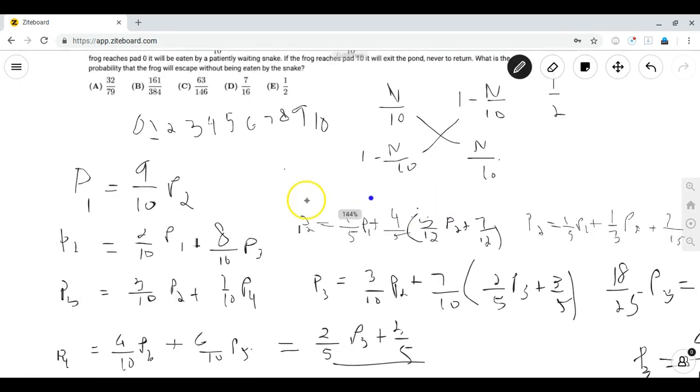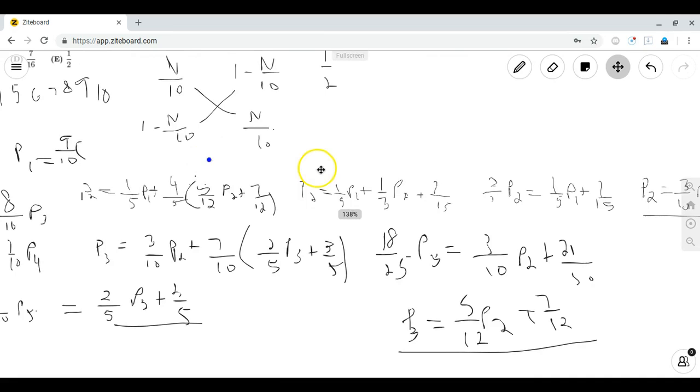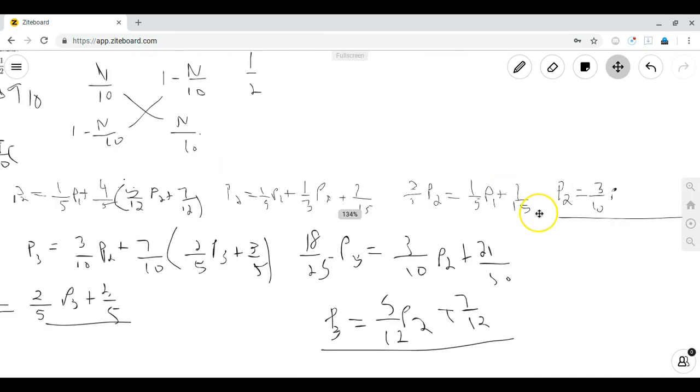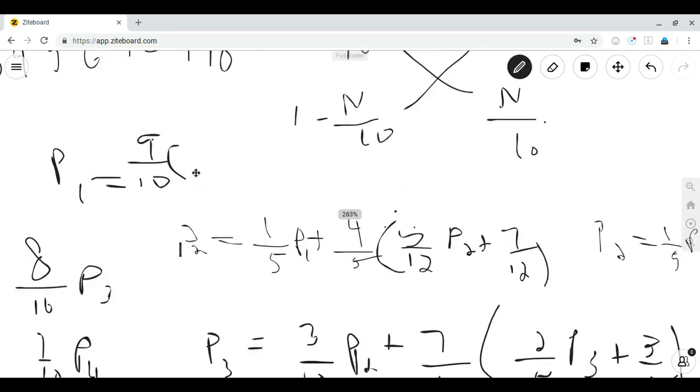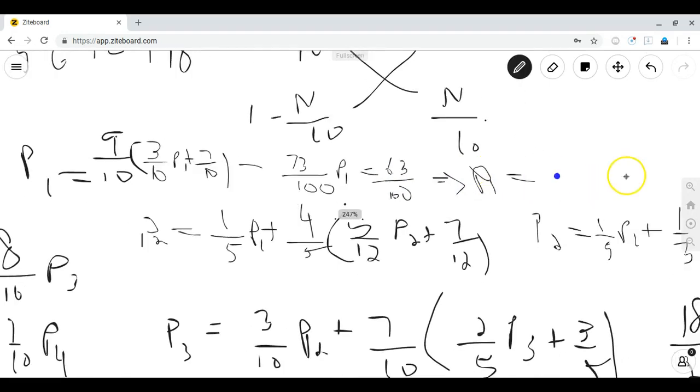P of 1 is equal to 9 tenths times p of 2 which is also equal to 3 tenths p1 plus 7 tenths. Expanding this and moving the p of 1 to the left hand side we see that 73 over 100 p of 1 is equal to 63 over 100, so p1 is equal to 63 over 73.